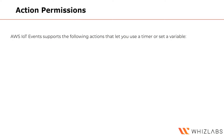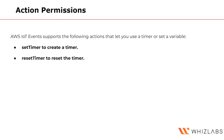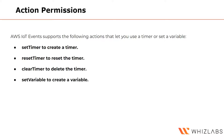Regarding action permissions: there are actions that let you use a timer or set a variable, so you can have events based on time. For example, with an electric scooter, if it stays in the same location for x minutes you assume nobody is using it, but if it's in motion someone has rented it. The set timer action creates a timer, reset timer resets it, clear timer deletes it, and set variables can be used to create specific variables.